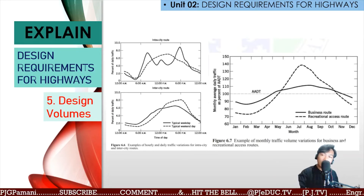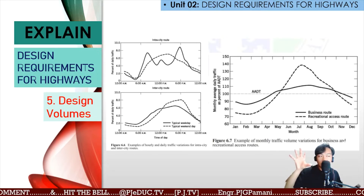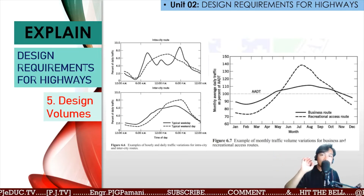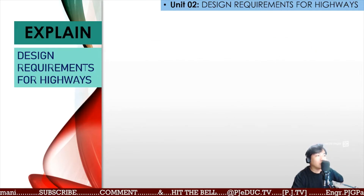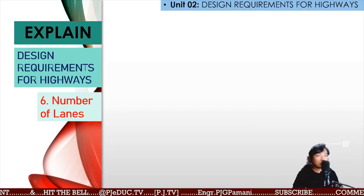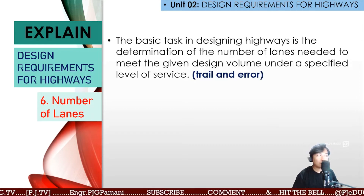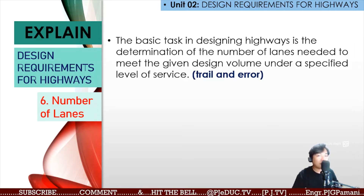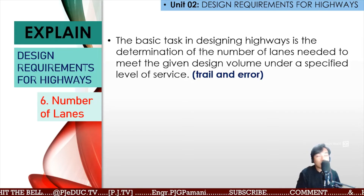On this road, this is how many vehicles we need to service. At this specific period of time we need expansion and planning. The next consideration is the number of lanes. The basic task in designing highways is the determination of the number of lanes needed to meet the given design volume of a specified level of service, which is basically a trial-and-error consideration.